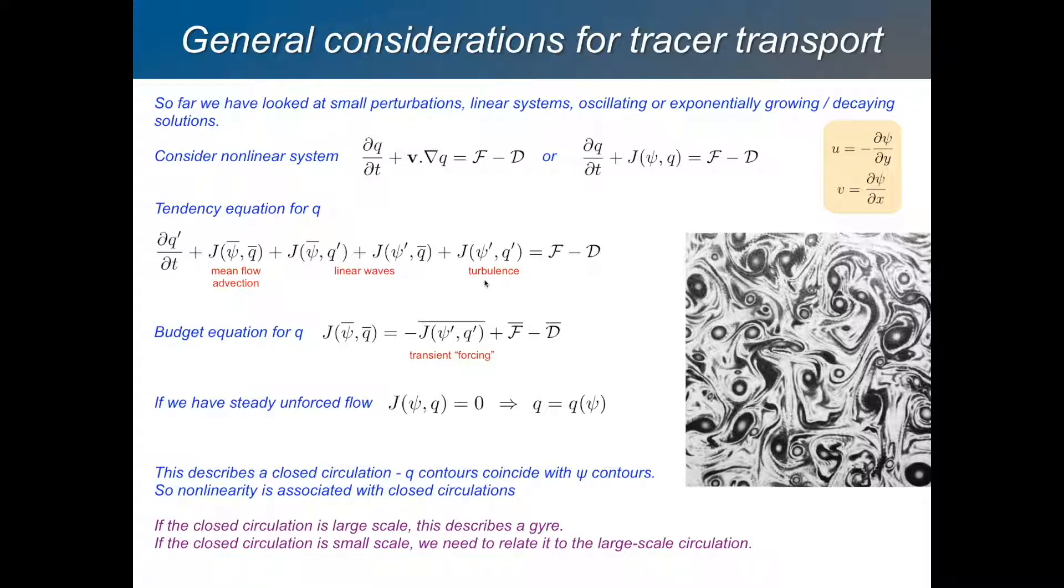And then there's this term, which is ψ′Q′, which is the term we've always neglected up to now, because it's quadratic in the perturbation and the perturbation is small, so it's going to be negligible. But now, let's think about the perturbation not being small, in which case we have to start thinking about what this term does. If you're interested in the systematic effect of this term, it's got a non-zero time mean. If you take the time mean of this whole equation, the time mean of these two terms will be zero, because the time mean of the perturbation is zero by construction. But the time mean of the product of these two perturbations will not necessarily be zero.